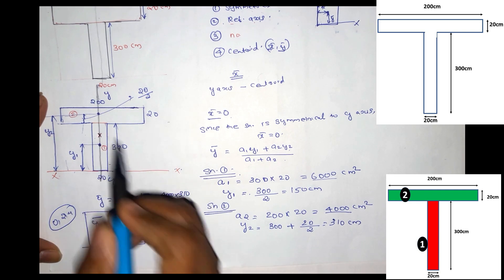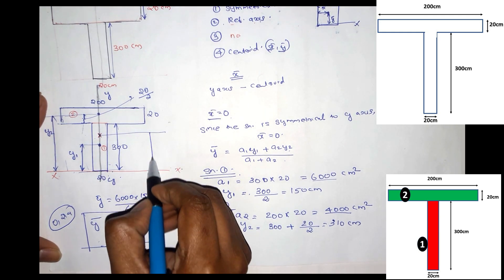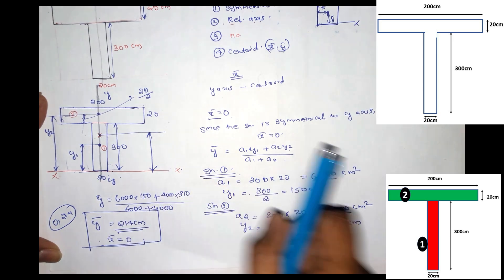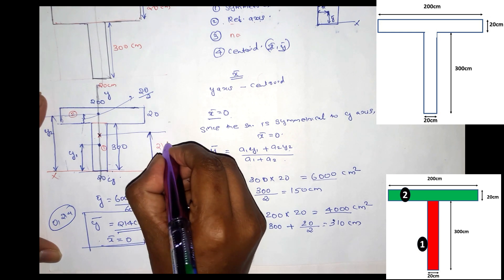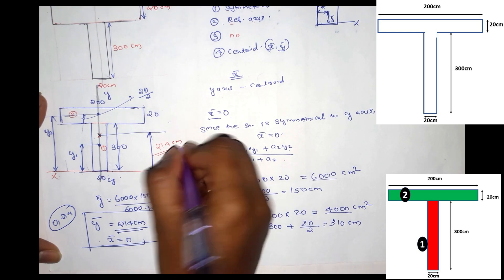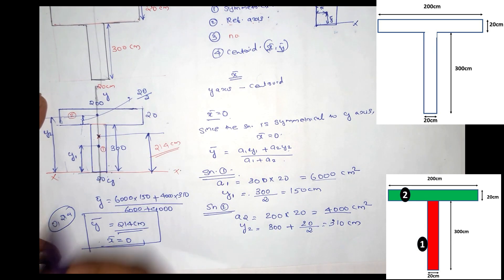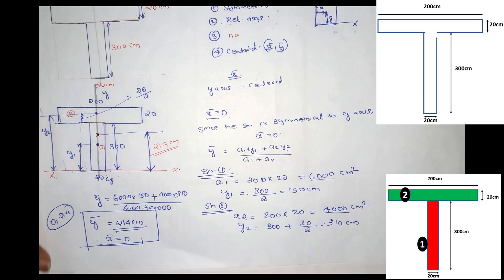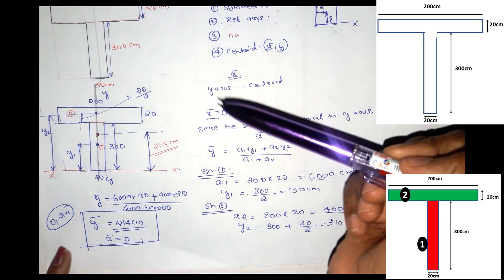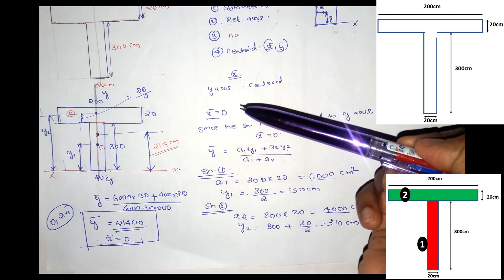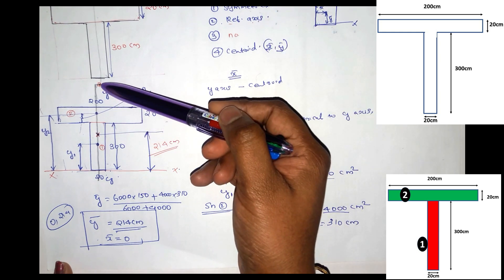We are marking the centroid point. The y-bar is the distance from the reference axis — 214 cm. X-bar is 0, so this point falls on the axis of symmetry. This is the centroid. The figure is symmetrical, the reference axis is marked, and this is our final answer.